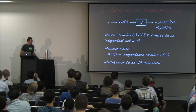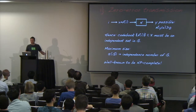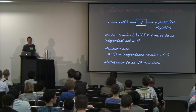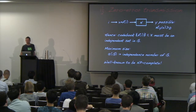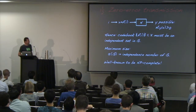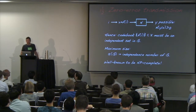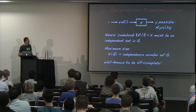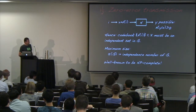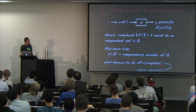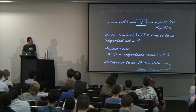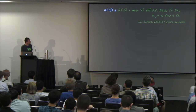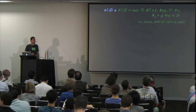Since finding the independence number is NP-hard and even approximating it is NP-hard, what's left is finding decent upper bounds. This leads to the Lovász number theta, which is a semidefinite program. It is written with J as the all-ones matrix and B as a positive semidefinite matrix with trace one, with rows and columns indexed by the confusability graph.